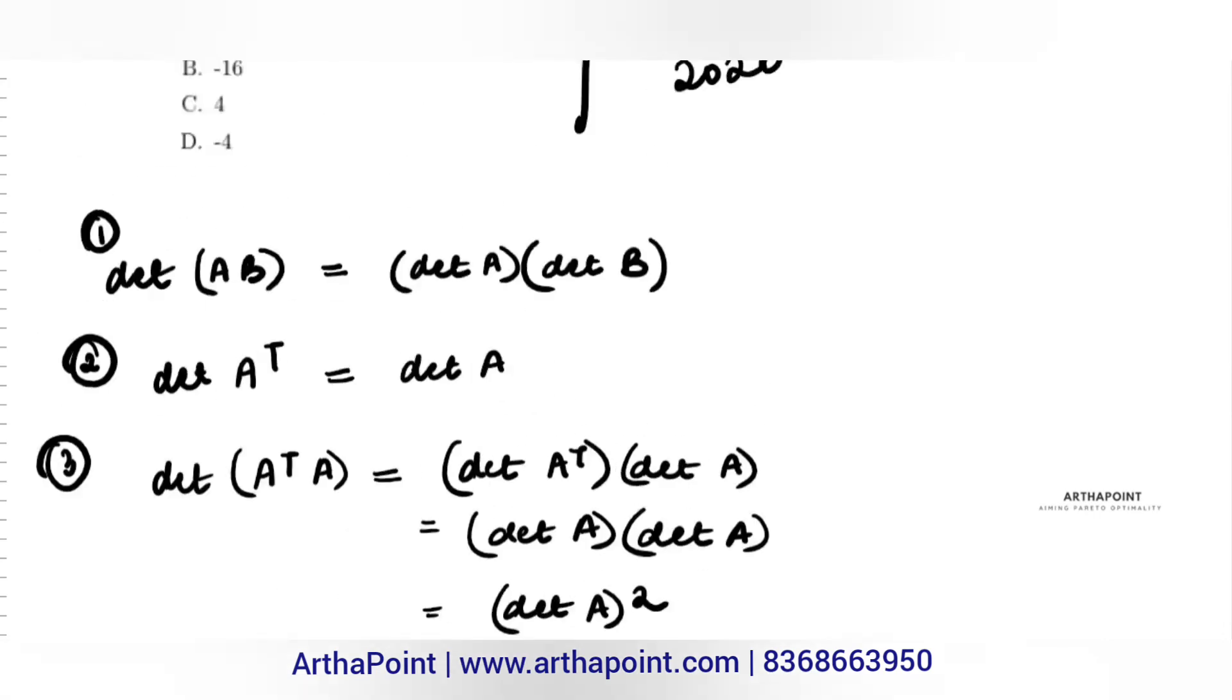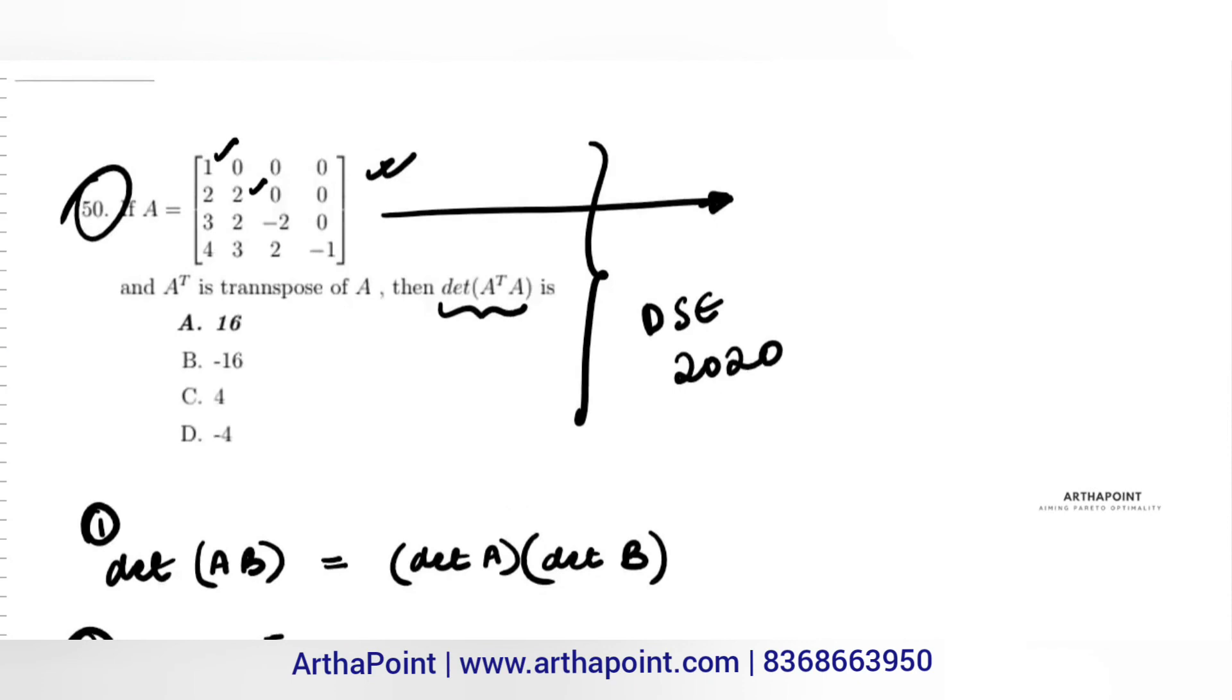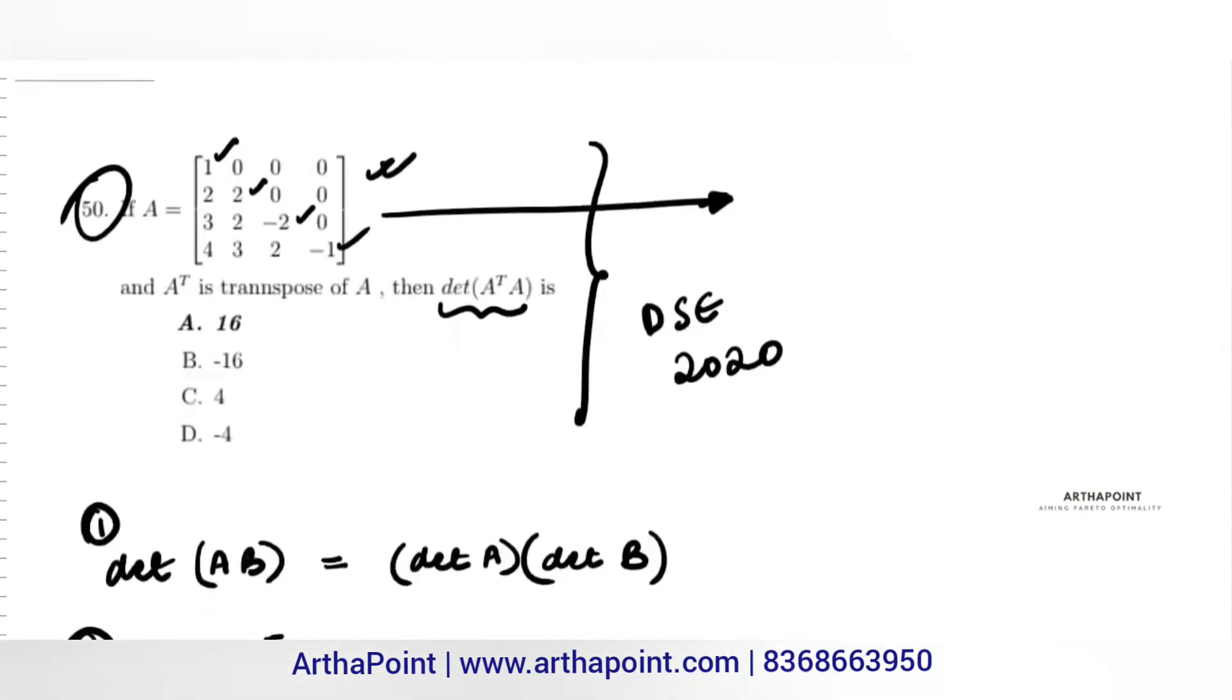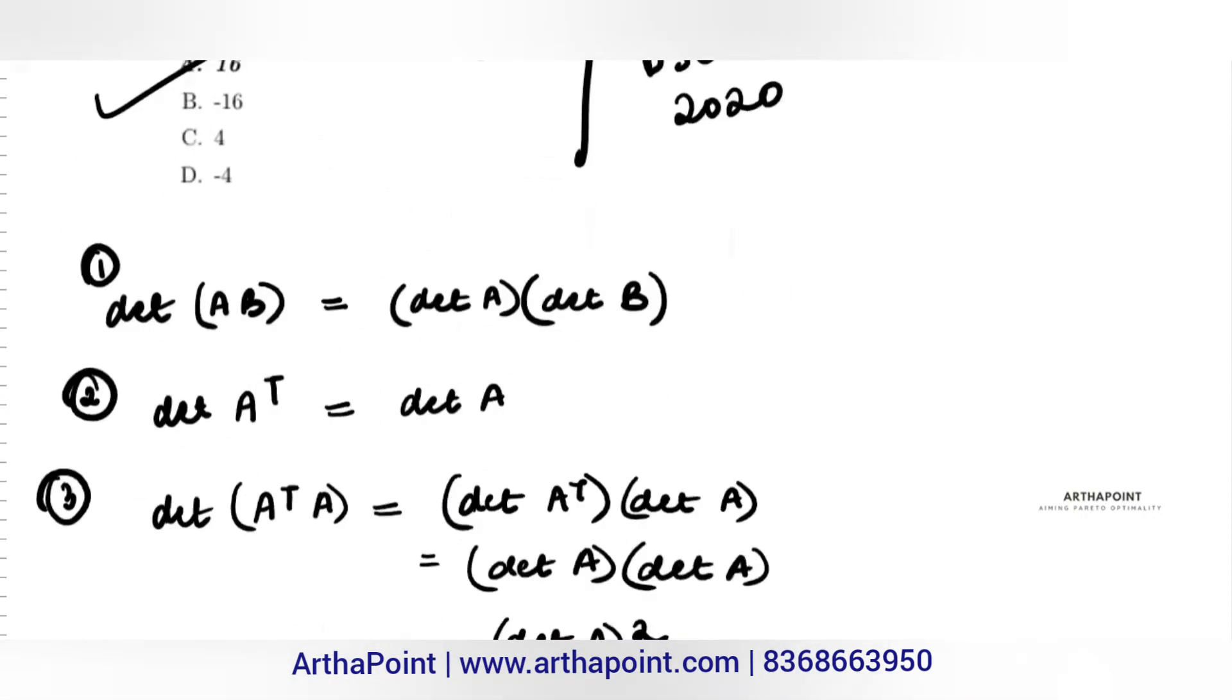So what are your diagonal elements? 1, 2, minus 2, minus 1. So the determinant of A will be simply 1 into 2 into minus 2 into minus 1, which will be 4. And here if I put 4 squared it will be 16, so the answer to this question is simply 16.